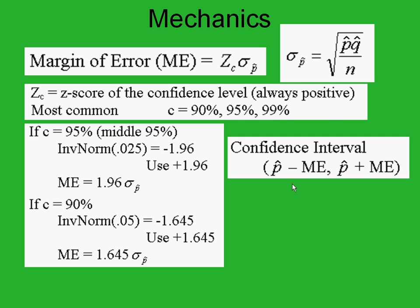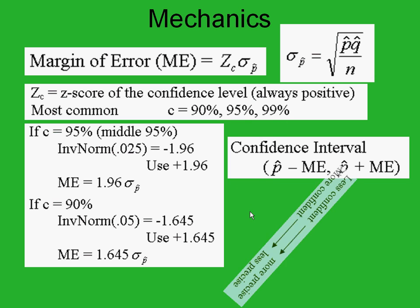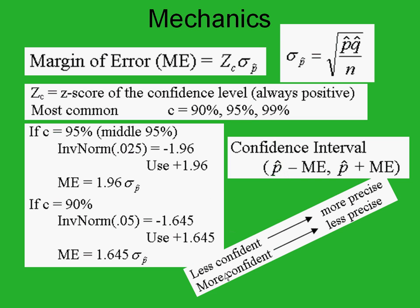So then we're ready to go with our confidence interval — take your p-hat, add and subtract this margin of error, and that is going to allow us to go from zero percent confidence to 95 percent confidence, or whatever you choose. Keep in mind: the more confident you get, the less precise — your interval has to widen, and you're not very precise. There is a benefit to being a little less confident: you have a more narrow, more precise interval.